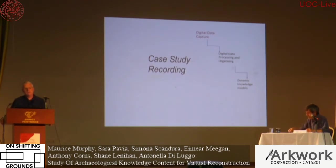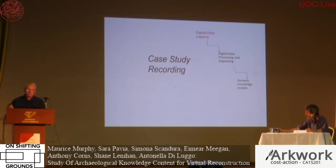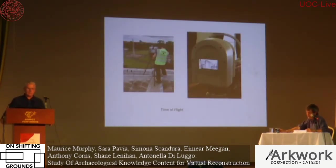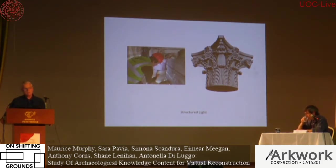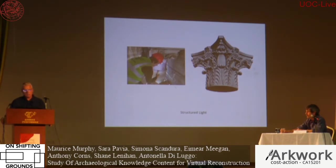Looking at how you move from digital data captured by laser scanning or photogrammetry, laser scanning data is captured very quickly but large point clouds are difficult to deal with. Structured light scanning is more specific and very high resolution — the points are very close together — and was used for capturing damaged capitals on the Four Courts, a typical classical building.